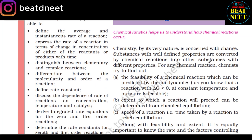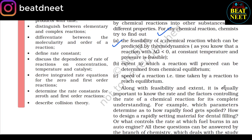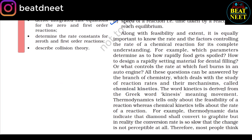Chemical Kinetics helps us to understand how chemical reactions occur. Chemistry by its very nature is concerned with change. Substances with well-defined properties are converted by chemical reactions into other substances with different properties. For any chemical reaction, chemists try to find out: (a) the feasibility of a chemical reaction, which can be predicted by thermodynamics — a reaction with delta G less than 0 at constant temperature and pressure is feasible; (b) the extent to which a reaction will proceed, determined from chemical equilibrium; (c) the speed of a reaction, that is, the time taken by a reaction to reach equilibrium.